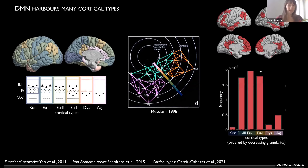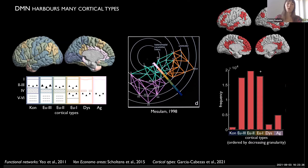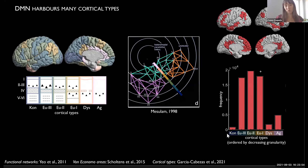We found that the default mode harbors all six cortical types, signifying a marked cytoarchitectural heterogeneity that might be surprising given we think of this as a somewhat unified network. Chi-squared tests show that cortical types are not equally represented — we compared proportions to 1,000 randomly rotated versions using the classic spin test. The default mode over-represents eulaminate 1 (a heteromodal type) and under-represents koniocortex (primary sensory areas). I'd guess that if the default mode were defined in the same individual as cytoarchitecture, you wouldn't actually find any koniocortex within it.